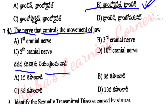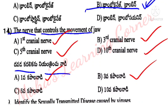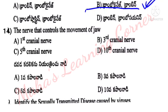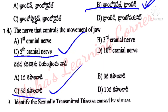Next question about cranial nerves — options include 1st cranial, 3rd cranial, 5th cranial, 10th cranial. Correct answer: Option C, 5th cranial nerve.